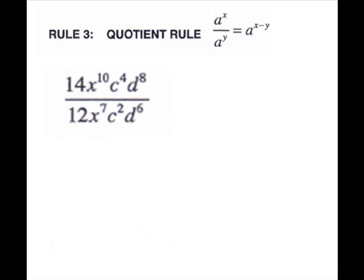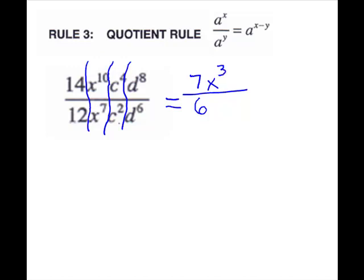Our next problem is really four little problems: plain numbers, x's, c's, and d's. For plain numbers, you divide if it divides evenly, or just reduce. 12 will not go into 14, so we reduce with a factor of 2 — 14 divided by 2 is 7, and 12 divided by 2 is 6. For the x's, keep the base and subtract. For the c's, keep the base and subtract exponents. For the d's, keep the base and subtract.